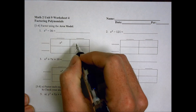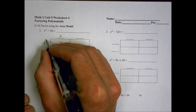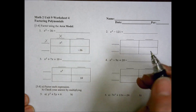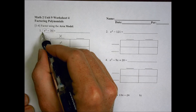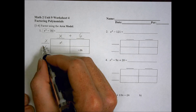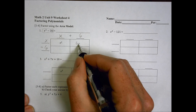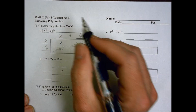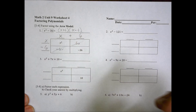Same idea as last time, except we're going to see how we get to x squared minus 36. If I multiply x times x I get x squared. To get negative 36, I can do 6 times 6, and if one is positive and one is negative, I'll get a positive 6x and a minus 6x which cancel out. So I end up with x plus 6 times x minus 6.